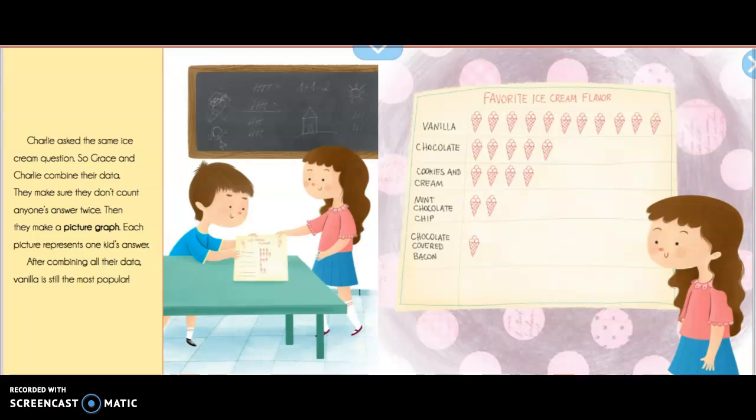Charlie asked the same ice cream question. So, Grace and Charlie combine their data. They make sure they don't count anyone's answer twice. Then, they make a picture graph. Each picture represents one kid's answer. After combining all their data, vanilla is still the most popular.